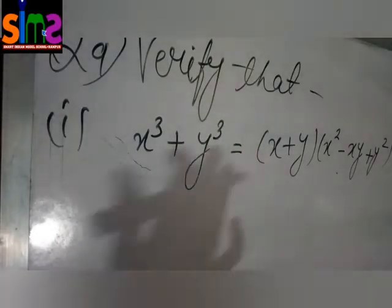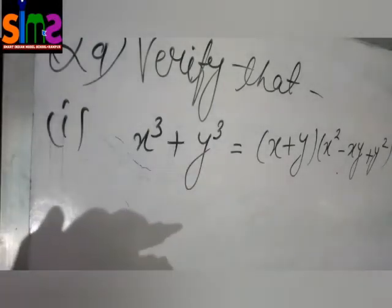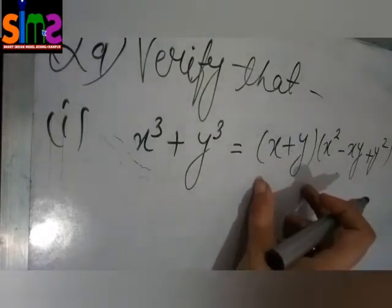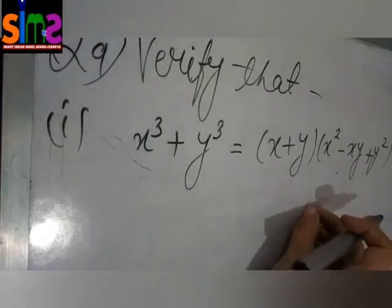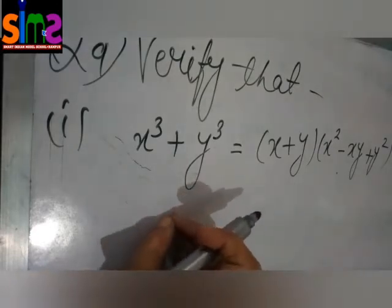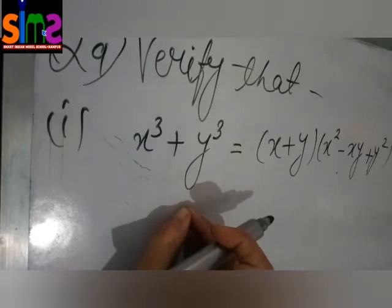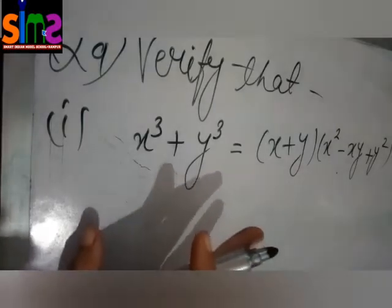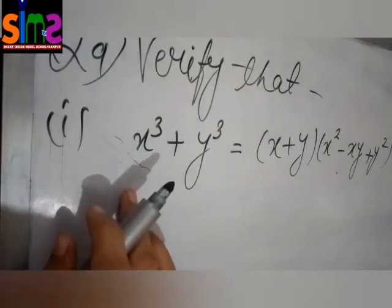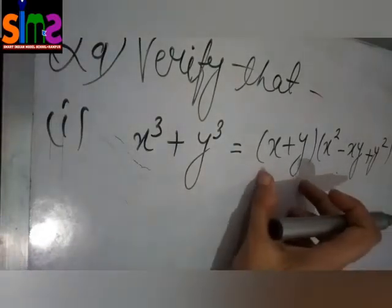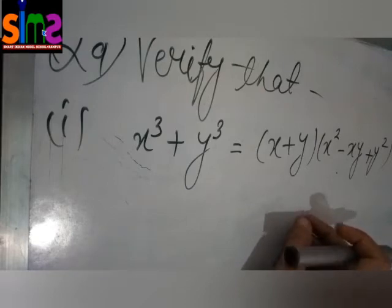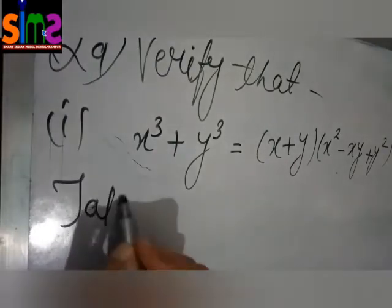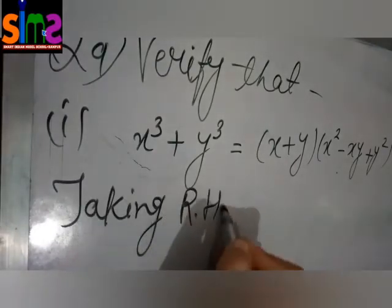So what can you do in this question? We can solve it from right hand side easily. As you can see that there are two brackets and we can multiply these two brackets but we can't do something with these x cube plus y cube because there is no bracket. We can solve it from this side also but it will take more time. So taking right hand side.